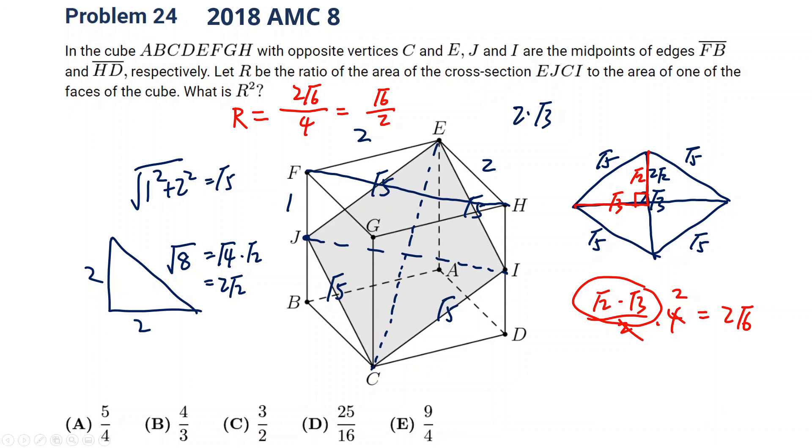So R squared, we are looking for R squared. R squared will be this squared. We open the bracket. The top root 6 root 6 together is 6. The bottom is 4. So it's going to be 3 over 2. Wow, this is almost the hardest AMC 8 question I've ever seen.